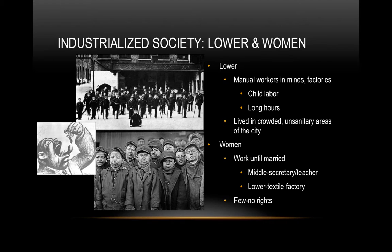Because of low wages, their housing isn't great, sanitation is poor, and they're in the worst areas of the city. For women, there are no specific rights — you're expected to work until married. Middle-class women worked as secretaries or teachers, while lower-class women worked in textile factories. Sometimes this continued after marriage if the family needed money. In these jobs, adult men were paid the most, then women, then children were paid the lowest wages.